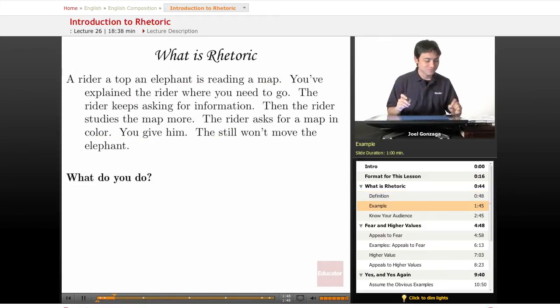Here's an imaginary parable. There is a rider on top of an elephant and that rider is reading a map. Now you've explained to this rider where you need to go, why going there is important and all that other kind of stuff and the rider says, well I just need a little bit more information before we go anywhere. And so you give that rider a little bit more information, you know, instead of just giving them the road map, you give them the topography map so they can see where the mountains and the hills and the rain forest is.